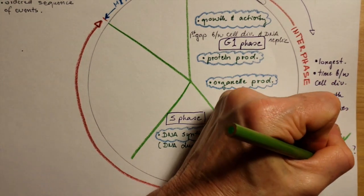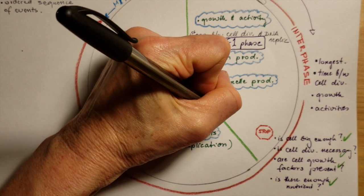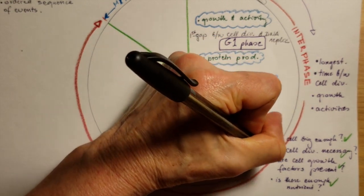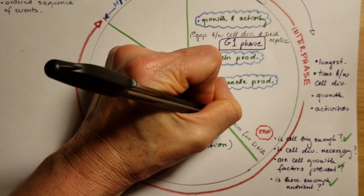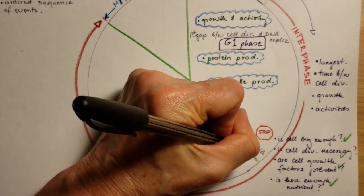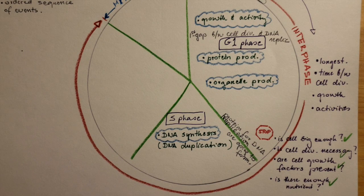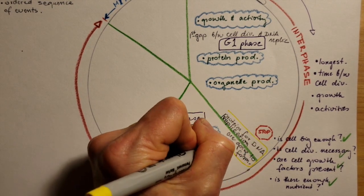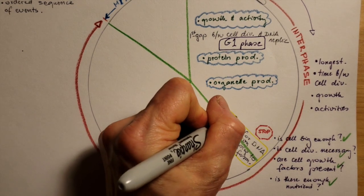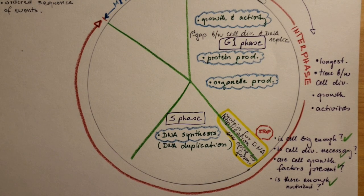So if the questions are yes for all of those four questions, the cell will start to produce proteins for DNA replication. For example, DNA polymerase they are going to make to do this DNA duplication. So with the help of those proteins, the cell can go from the G1 phase, can proceed into the S phase.